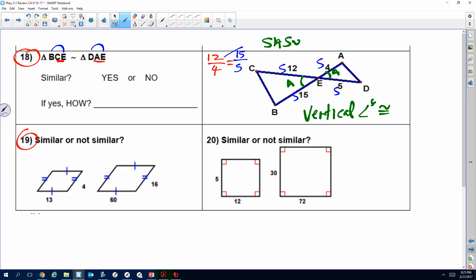If I cross multiply, we get 4 times 15 is 60 and 12 times 5 is 60. Since they're both the same, then yes they are similar. If yes, how? Side-angle-side similarity.